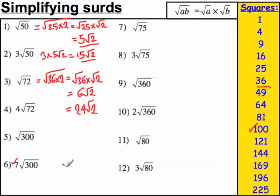So the square root of 300, that's actually the square root of 100 times 3, which is the square root of 100 times the square root of 3, which is 10 root 3. But you wanted 7 lots of this, and 7 times 10 root 3 must be 70 root 3.